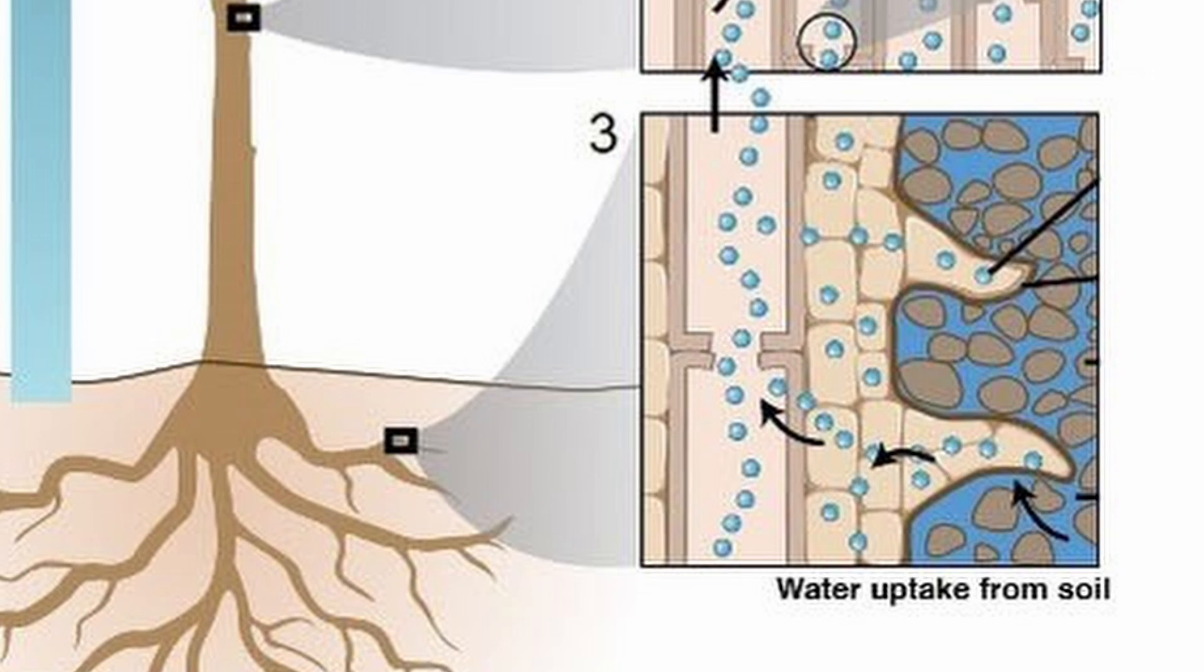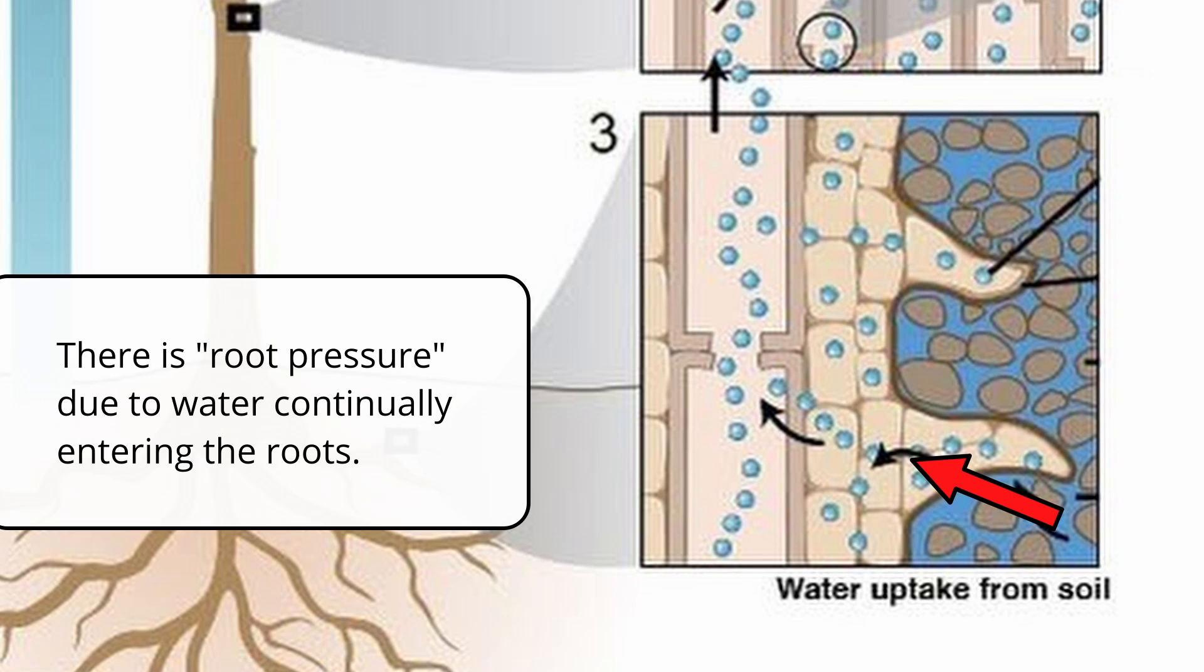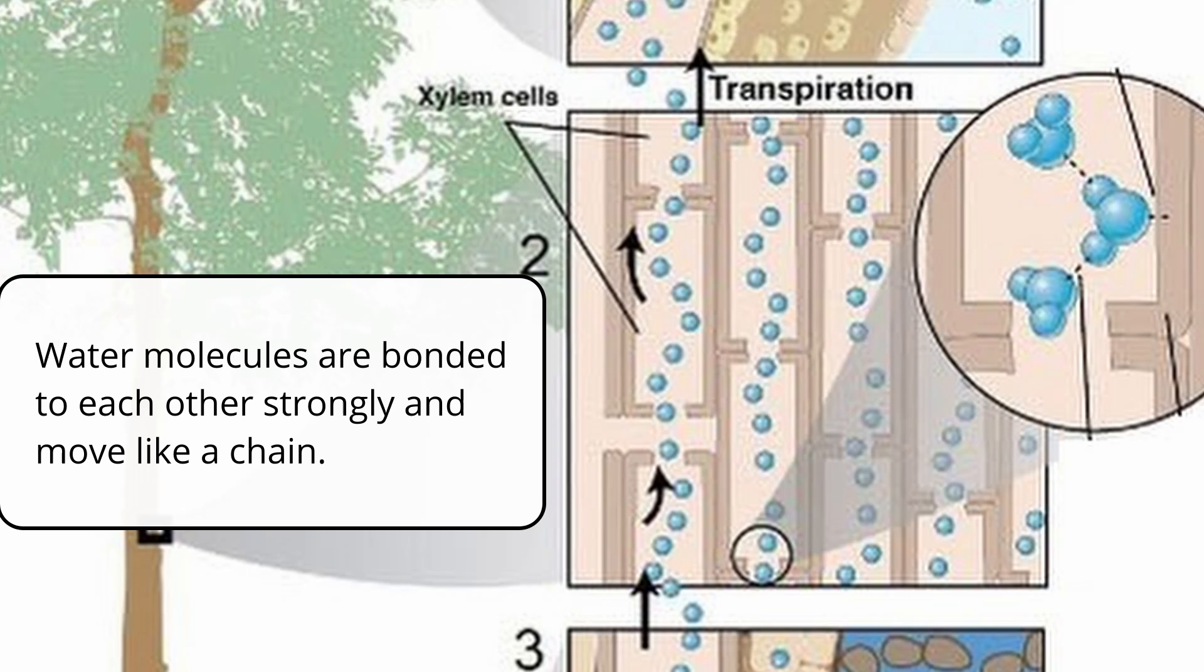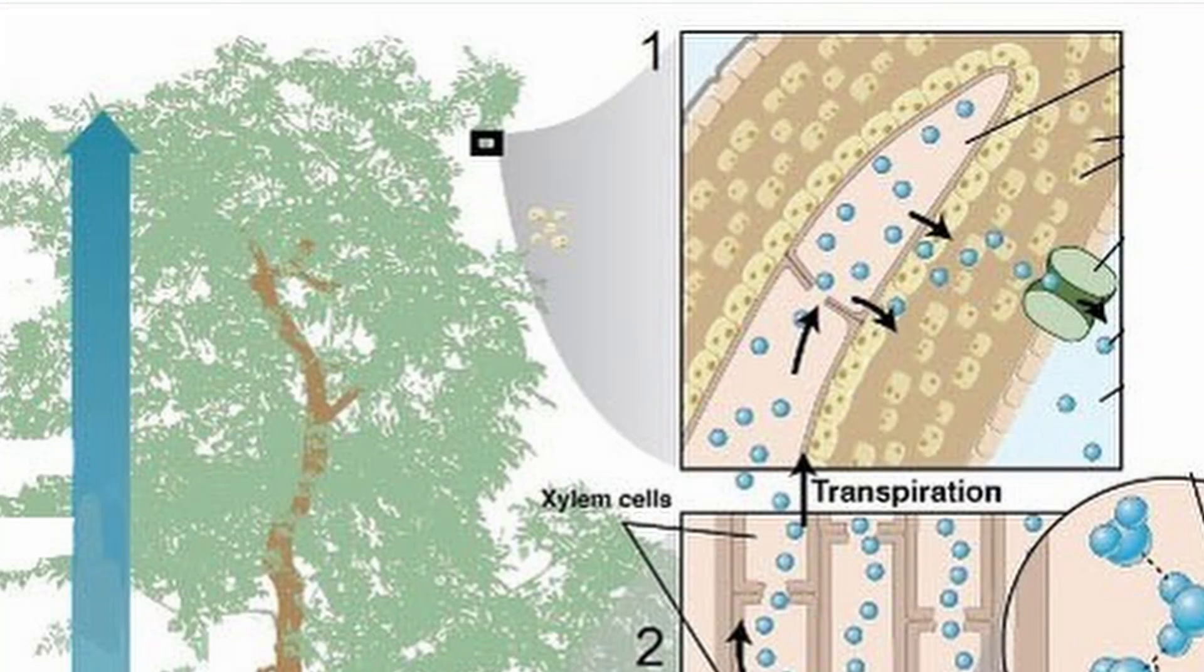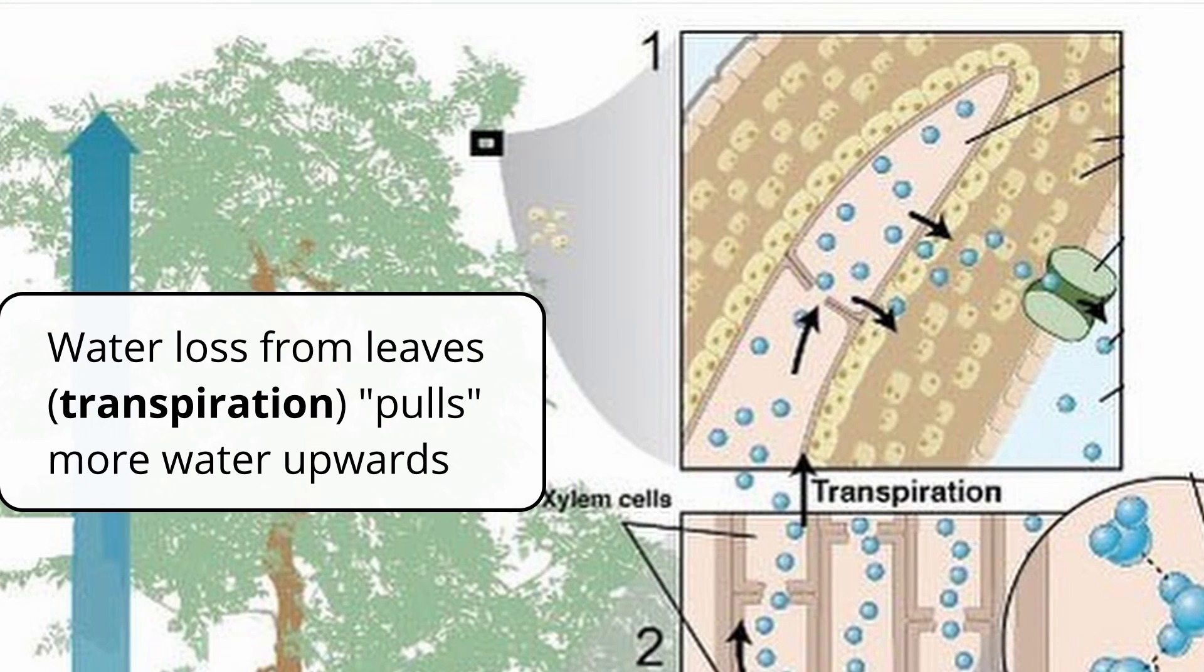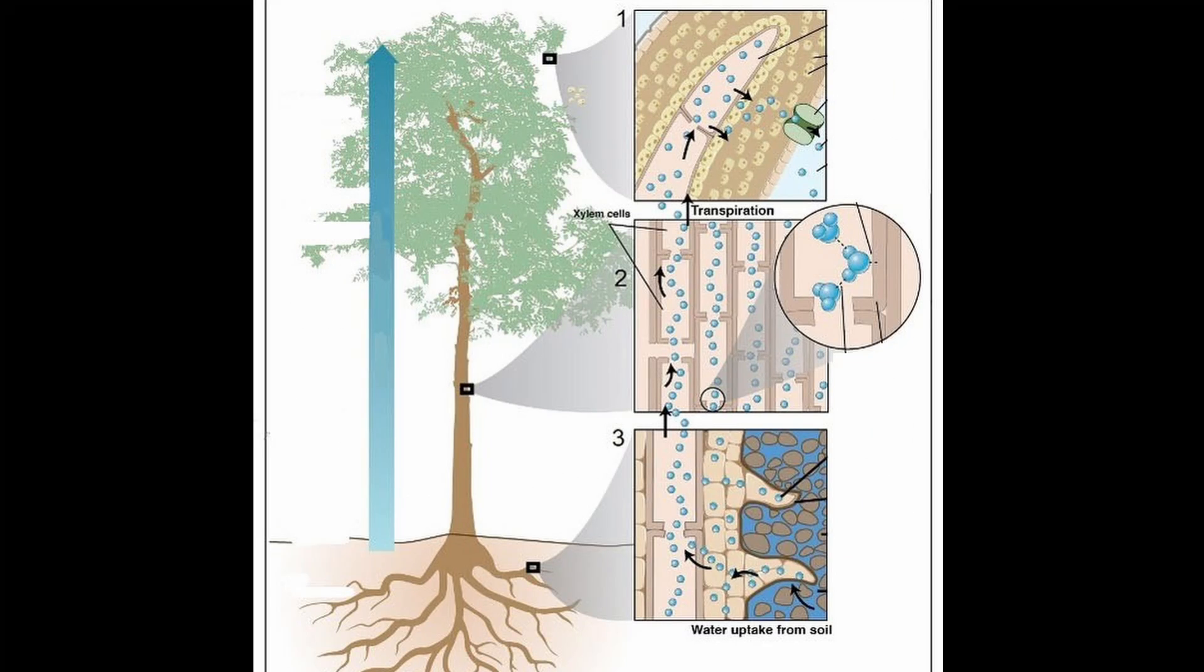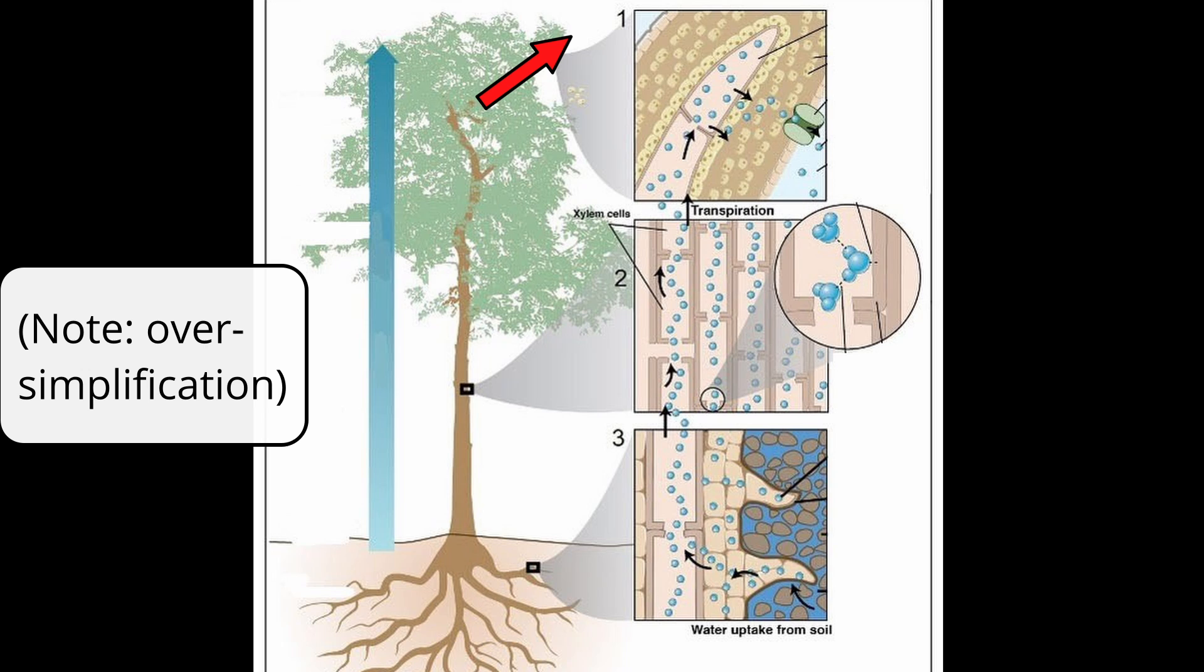The way it works is as the water is coming in from the soil, it sort of pushes the water upwards. Because water molecules have a strong connection to one another, they function like a chain of water. At the top of the plant, as the leaves open up to draw in carbon dioxide, they also lose water at the same time. So you can imagine a chain of water that's getting pulled out of the leaves, and then it pulls up the water that's connected all the way down to the roots.